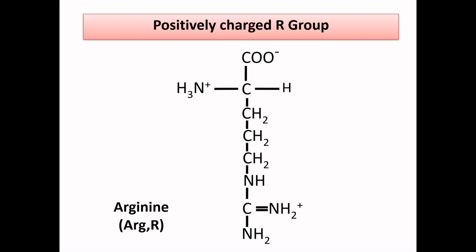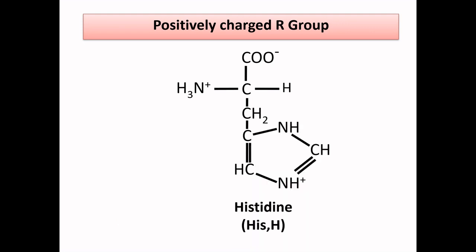Arginine has three amino groups attached to a methyl group, and one of the amino groups is attached with the side chain, so remember these three amino-attached groups as arginine. Histidine has a five-member heterocyclic ring containing two amino groups, and this is called the imidazole group, so remember this structure having a five-member ring as histidine.